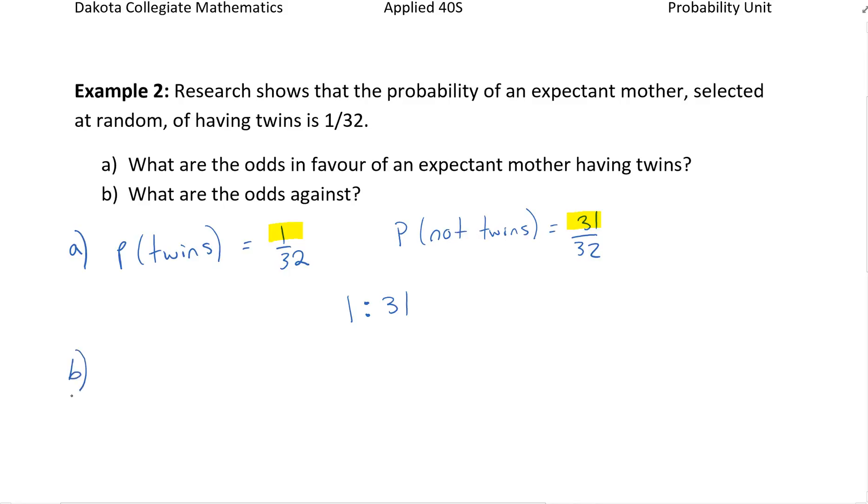Those are odds in favor of an expectant mother having twins. What are the odds against then? You just have to rearrange them: 31 to 1. It's understood that it's favorable to unfavorable in part A and unfavorable to favorable in part B.